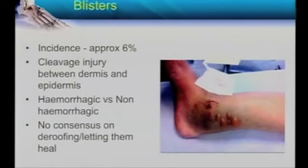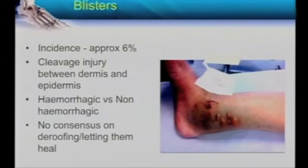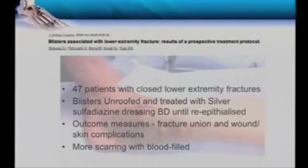Blisters. About five percent of your ankle fractures will have blisters. There is a distinction between hemorrhagic and non-hemorrhagic ones — non-hemorrhagic ones are the innocuous ones, while hemorrhagic ones need more consideration. There is no consensus in the literature whether you de-roof them or treat them expectantly and let nature do its job. But if you do operate, de-roof and treat carefully, and fix the fracture away from the site of your blisters so that you can at least have fracture stability.